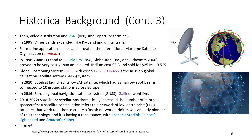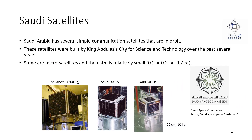Saudi Arabia has several satellite communication satellites in orbit — currently more than 16 satellites. They started with small ones, some built from scratch by King Abdulaziz City for Science and Technology, which has a National Satellite Center. There are also small CubeSats and microsatellites that are usually launched through Kazakhstan or other states formerly connected with Russia.